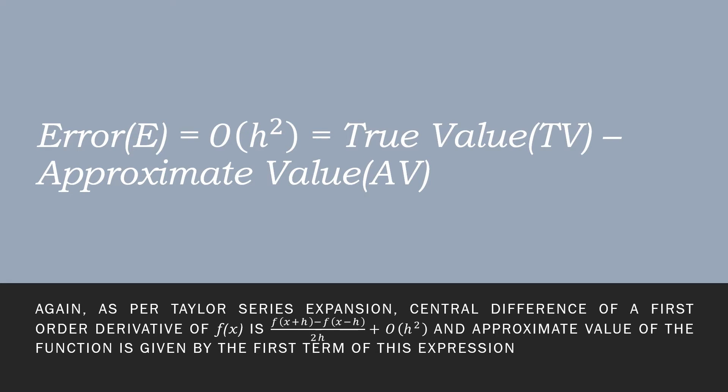What happens is that when you try to discretize a partial differential equation with the help of Taylor's expansion, the first order derivative of f(x) is obtained. If we use the central difference method, then the first order derivative of f(x) is f(x plus h) minus f(x minus h), where h is the step size for the increment, generally uniform or equal, plus all the other higher order terms.